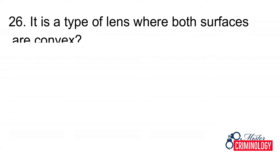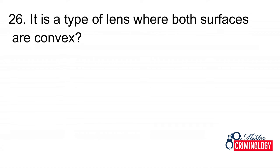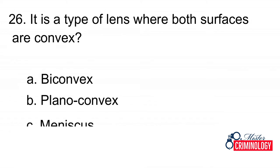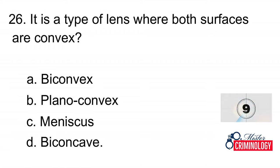Question 26: It is a type of lens where both surfaces are convex. A. Biconvex, B. Plano-convex, C. Meniscus, D. Biconcave. Answer: A. Biconvex.